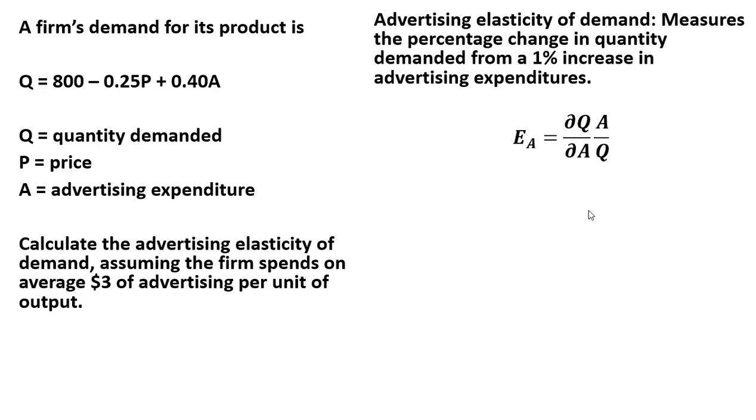There are basically a few things here. First, we need the partial derivative of the demand equation with respect to A, advertising expenditures. That's just going to be whatever is in front of the A term here. So 0.4 gives the value of this partial derivative.